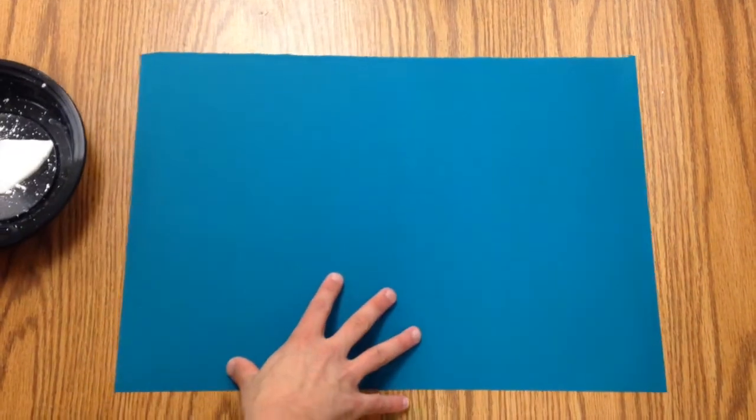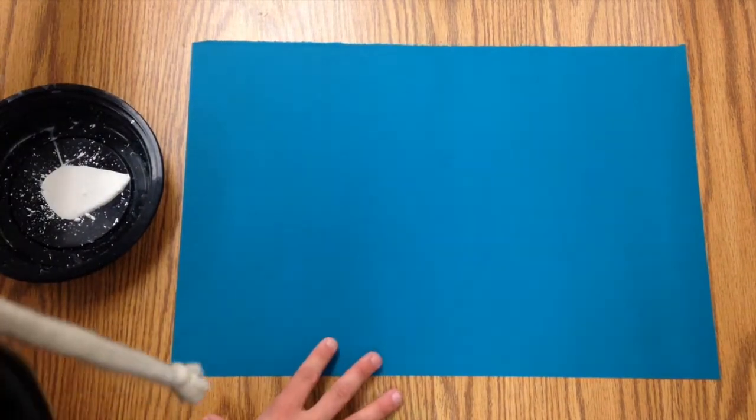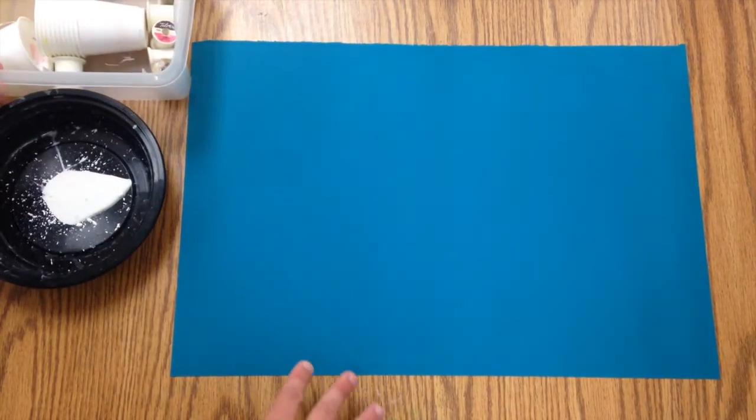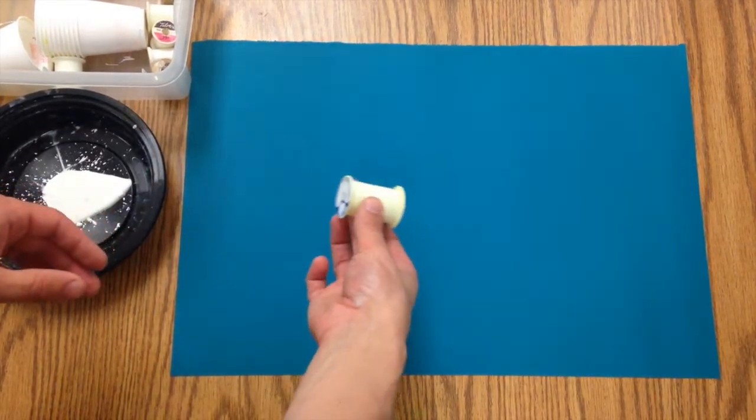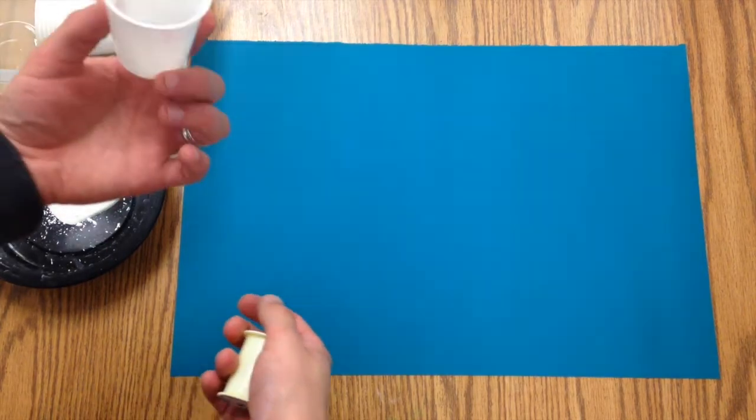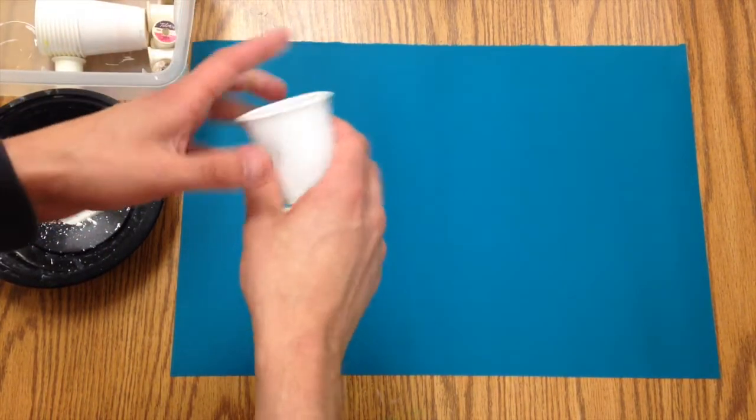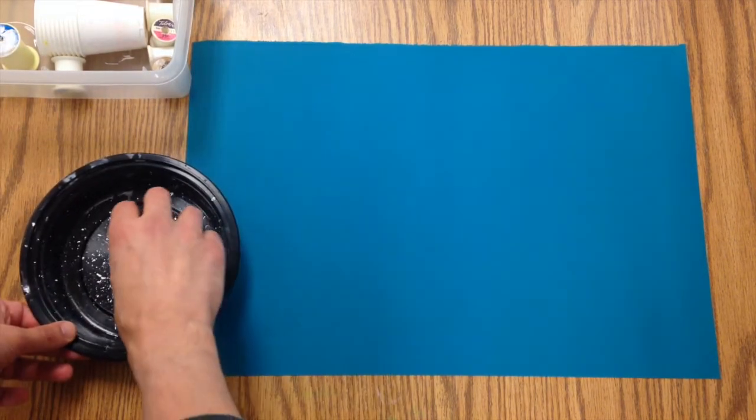So we're going to take a tray of some ink here and then we're going to have a box of some round objects. Inside we've got a spool from some thread and we also have these cups. We can put ink on the lip of the cup and make bubbles. These will make nice big bubbles.